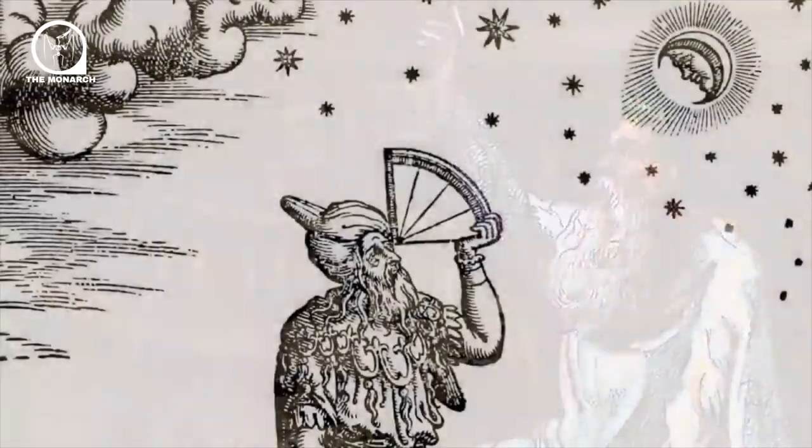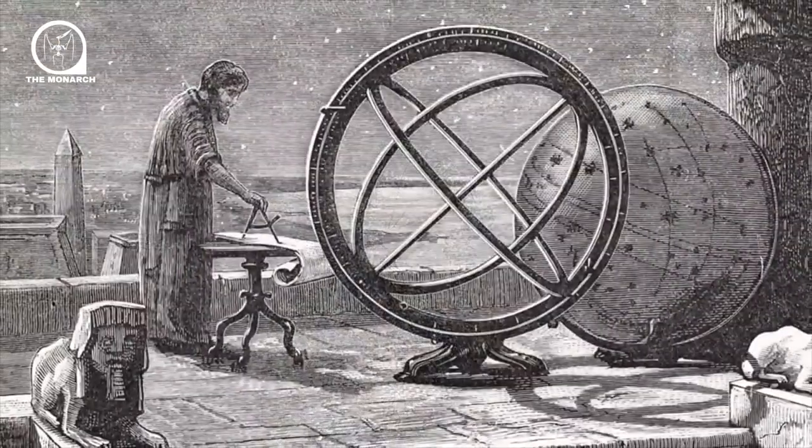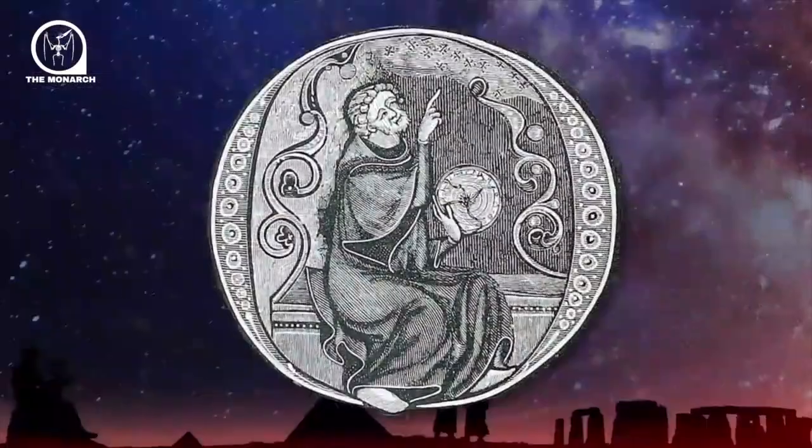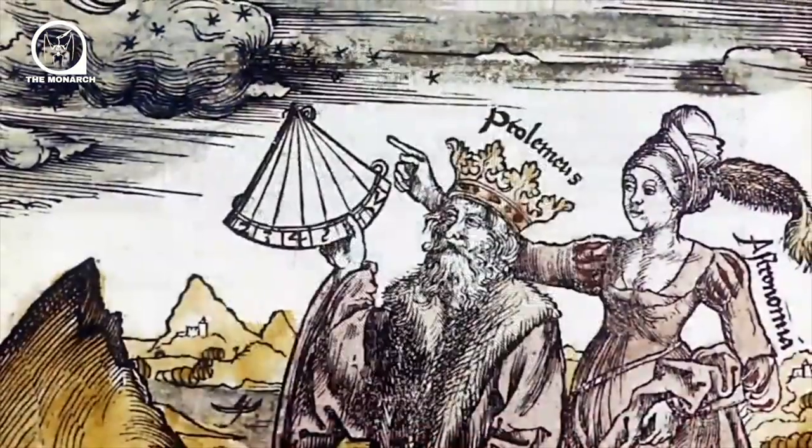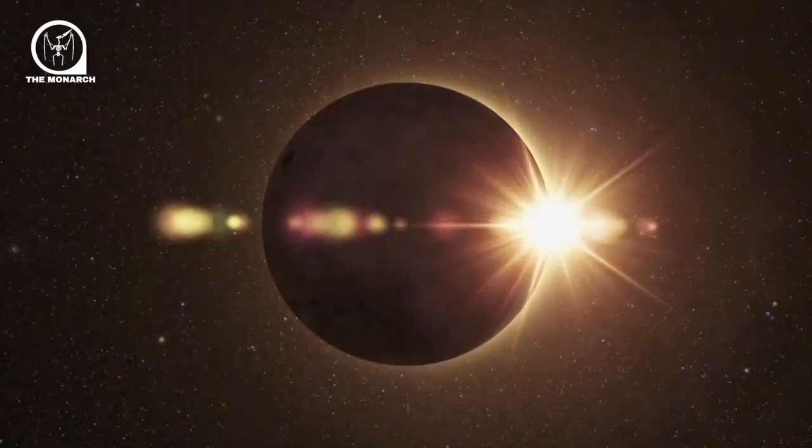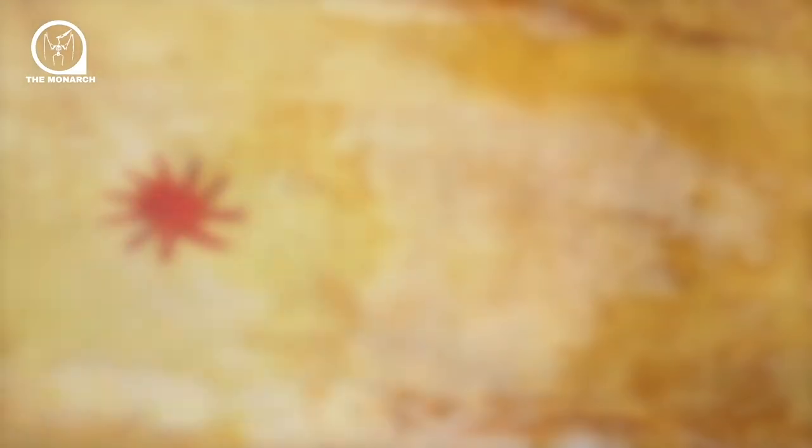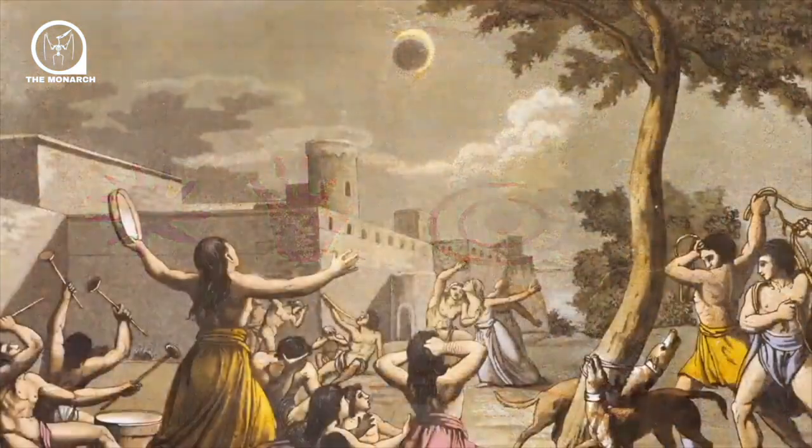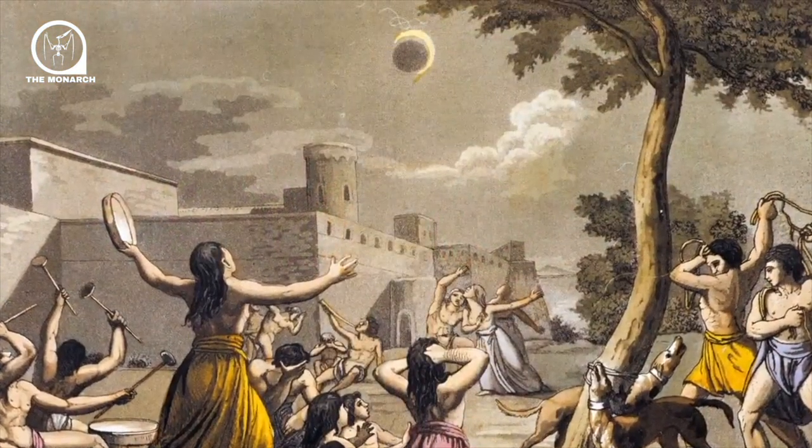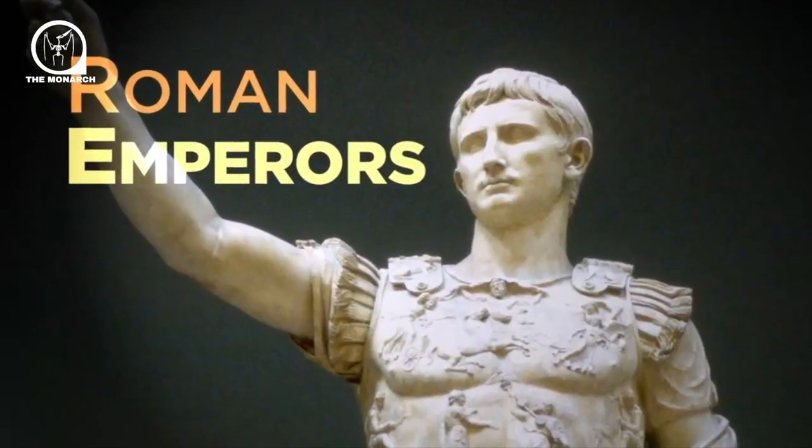In ancient times, most observers saw the stars as a sphere surrounding the Earth and as the home of deities. The Greeks were the first to see celestial events as phenomena subject to human investigation rather than the fickle whims of the gods.